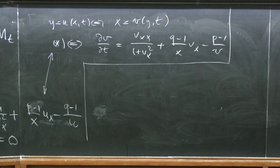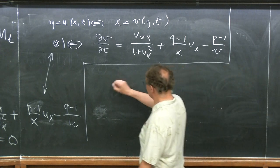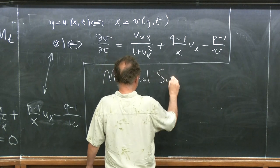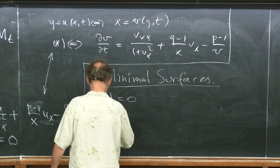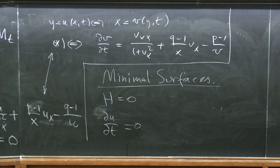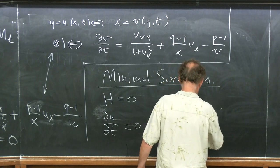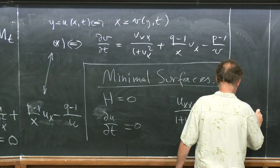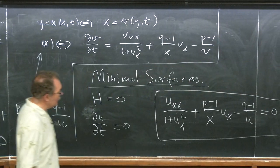Let's start with minimal surfaces. Minimal surfaces are surfaces whose mean curvature vanishes. In this context, they are solutions to mean curvature flow that don't depend on time — setting the time derivative to zero gives an ODE. Let's describe the solutions to this ODE.